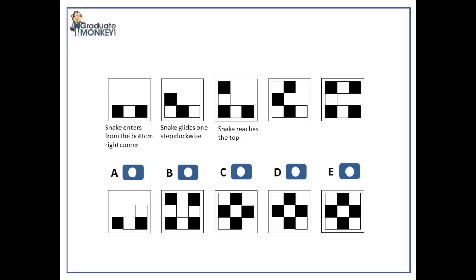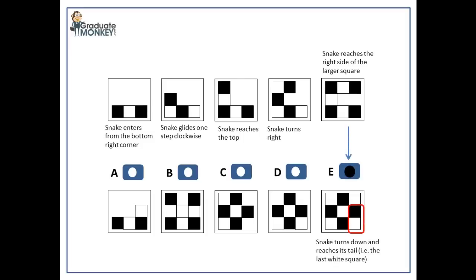Do you get the picture? Because in the fifth pattern, the snake reaches the right side of the larger square, the next move should be down. Remember the snake's head is the first black square. So when it moves down, its head will be in the middle of the right side of the square. The final white square that entered from the bottom right corner would be the tail of the snake. In other words, the head of the snake reaches its tail. Therefore the correct answer must be E.